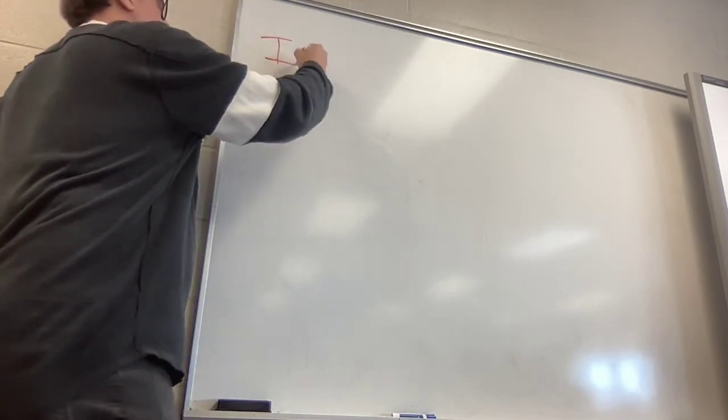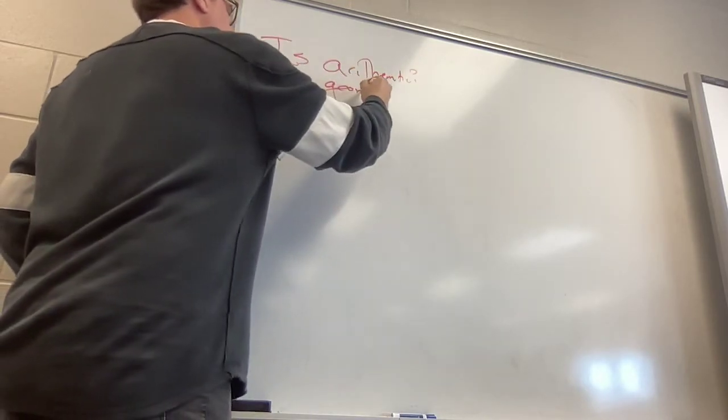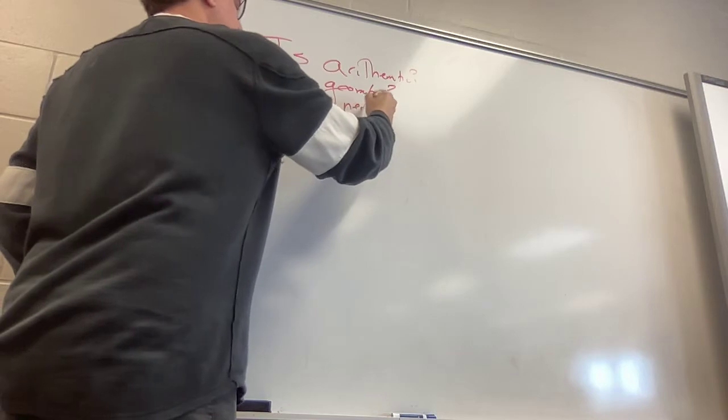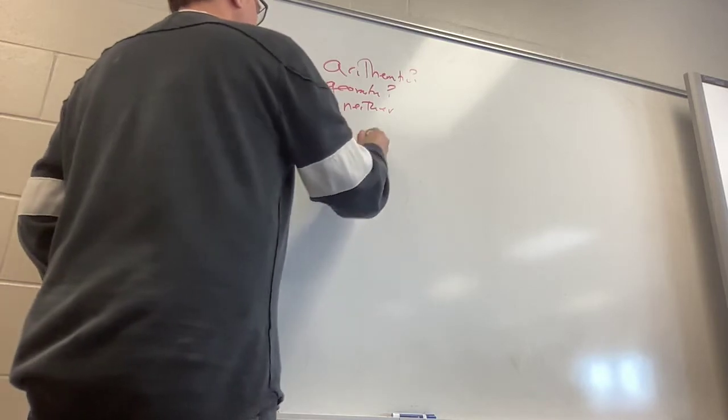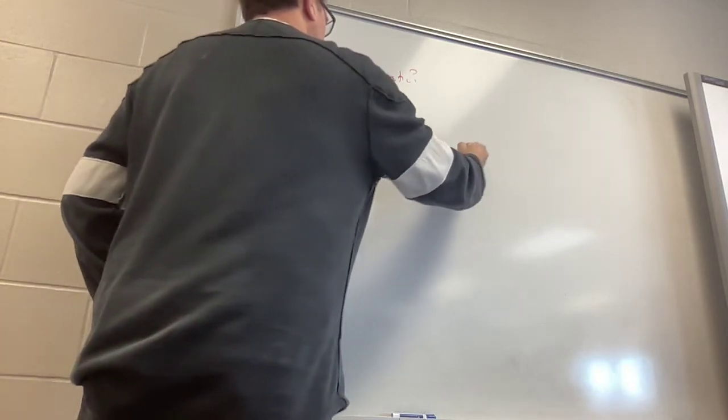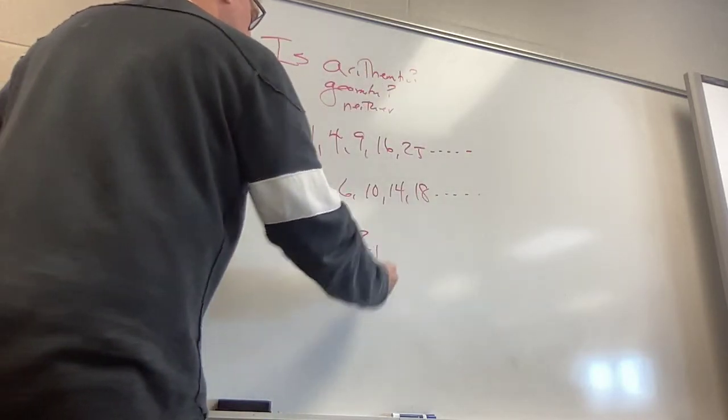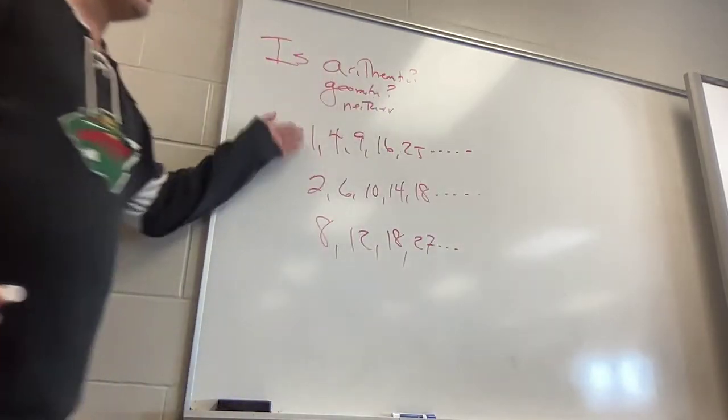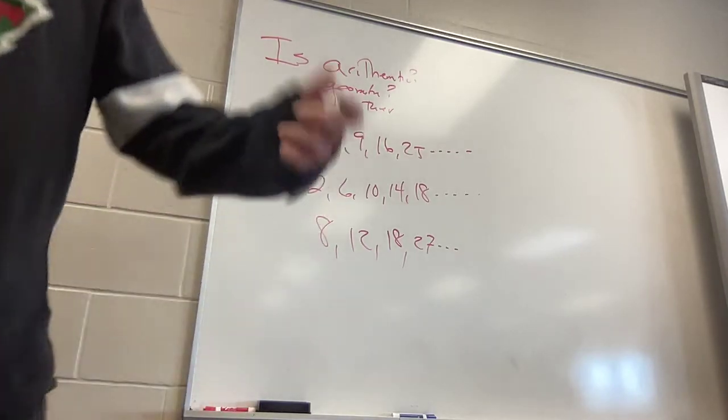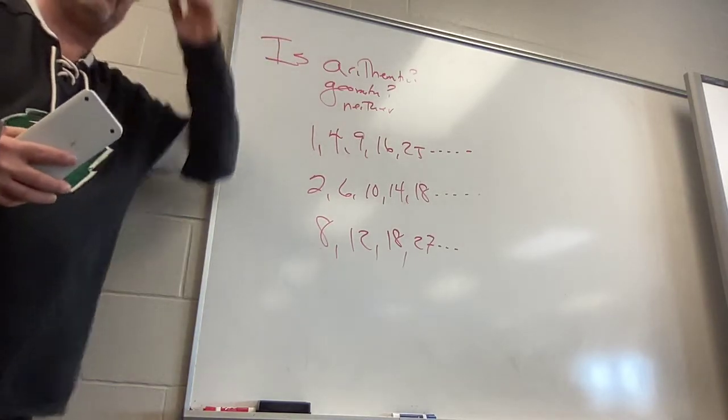The following. It's going to say, is arithmetic, question mark, geometric, question mark, neither. For a quick practice, would you please do the following thing? One, two, nine, eight, eight, eight. What do you do? Two, six, 10, 18. Would you please do eight, 12, 18, 27. Would you please do these three things on your calculator to determine if they are arithmetic, if they are geometric, or they are neither? Sorry for the bad writing.